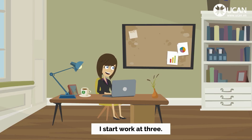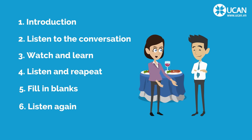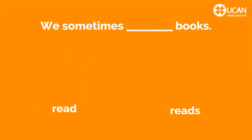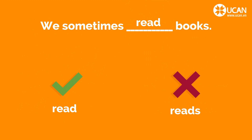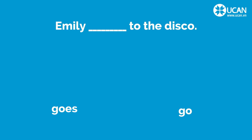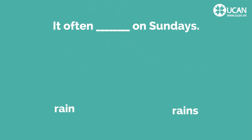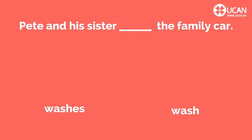I start work at 3. Fill in the blanks: We sometimes read books. Emily goes to the disco. It often rains on Sundays. Pete and his sister wash the family car.